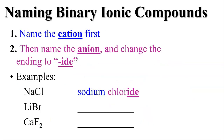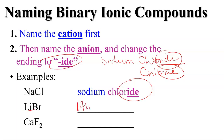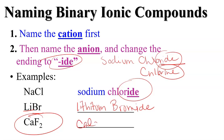Step one: name your cation first, then name your anion and change the ending to 'ide.' Remember, when we said sodium chloride, chlorine is the anion that joined with sodium — we just change 'ine' to 'ide.' So here we have lithium — write that first. Then we have bromine, and we change it to bromide, I-D-E. Next, we have calcium and fluorine, but we write fluoride instead of fluorine — calcium fluoride.